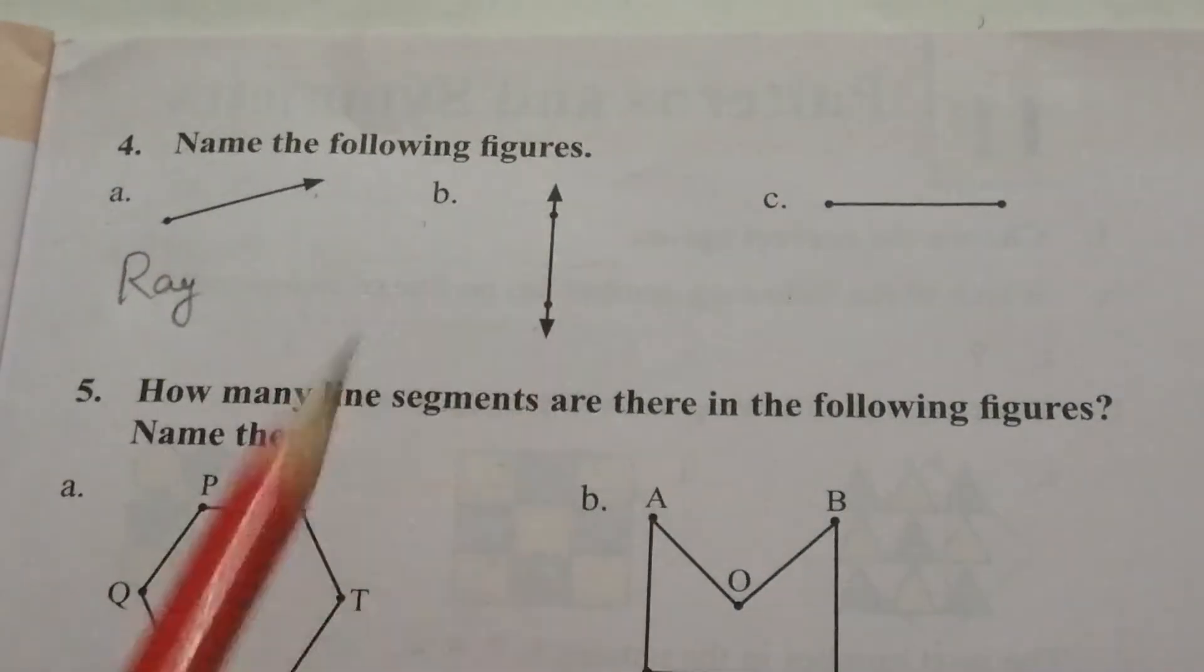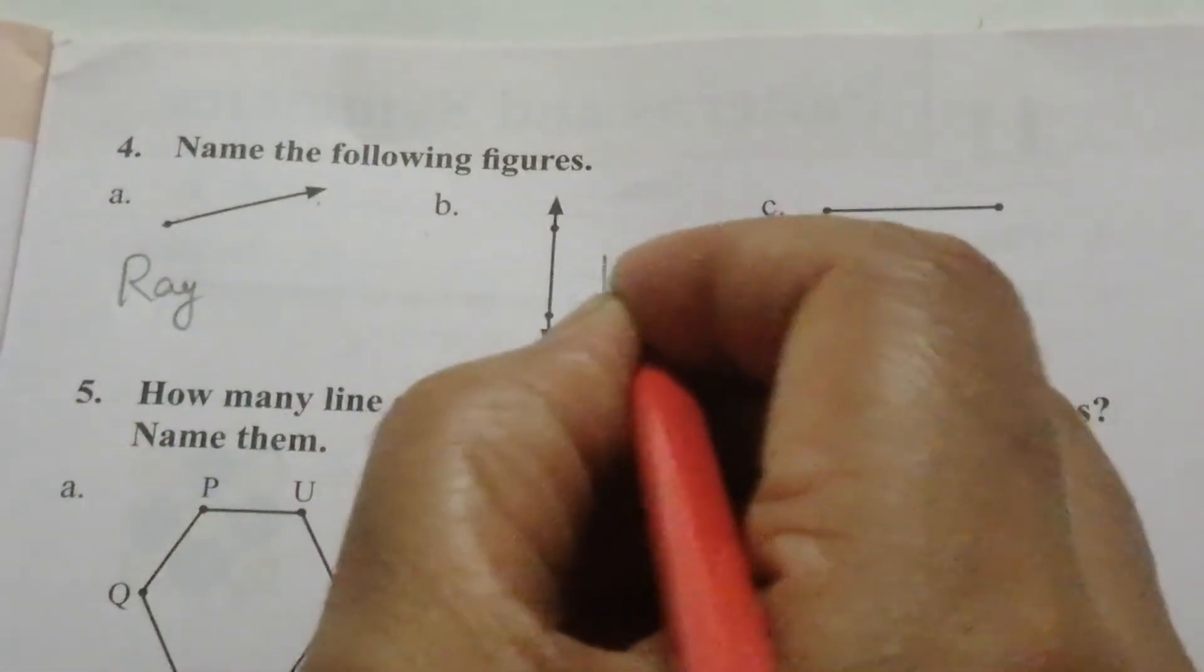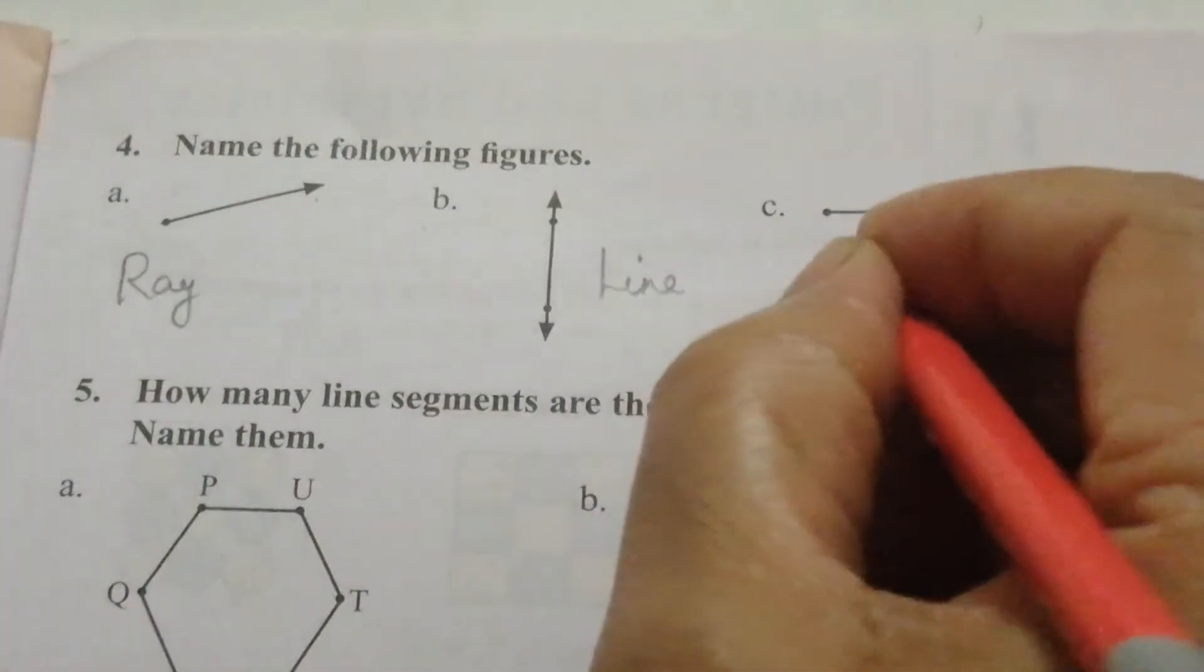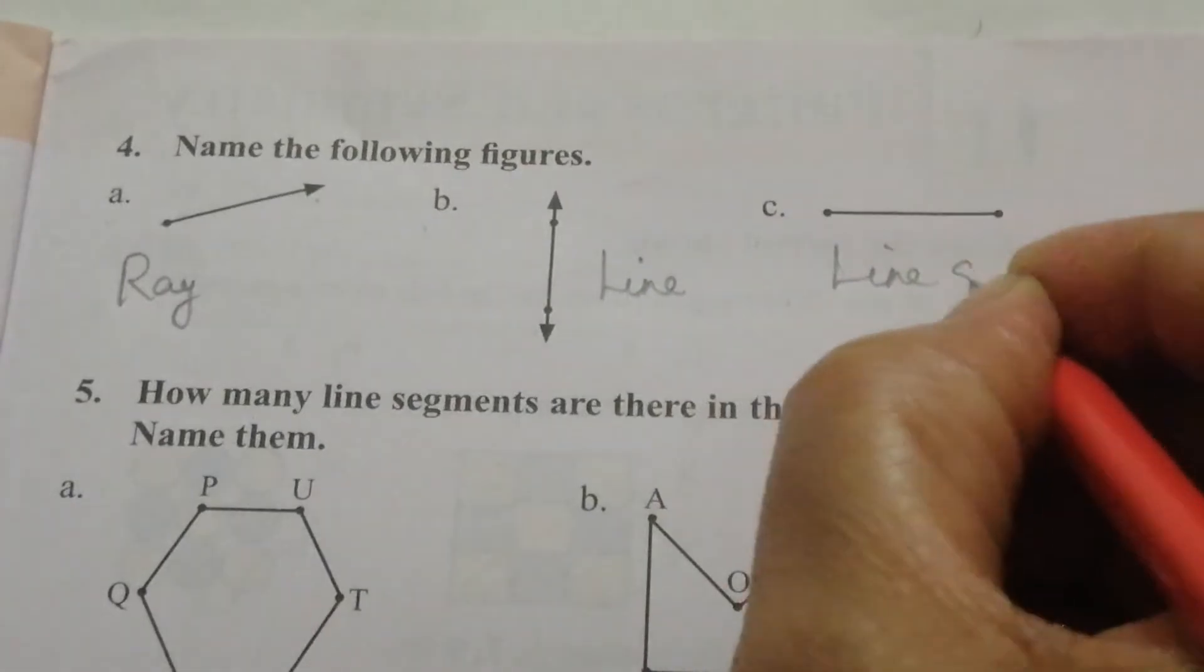B. It has two arrowheads. So, it is a line. C. It has two fixed points. So, it is a line segment.